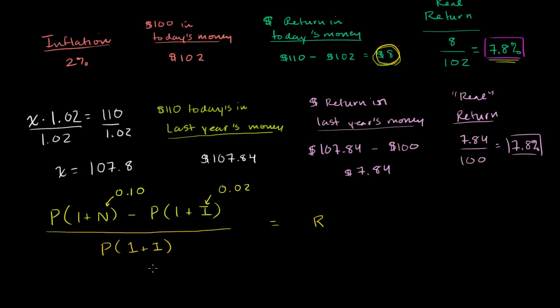Now one thing we can do right off the bat to simplify this is that we have everything in the numerator and everything in the denominator is divisible by P. So let's divide the numerator and the denominator by P. Simplify it a little bit, just like that.